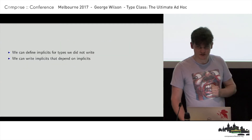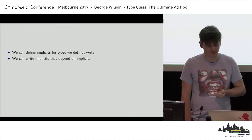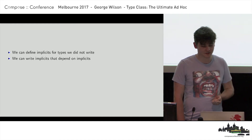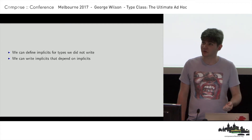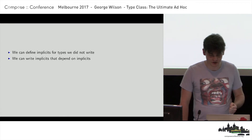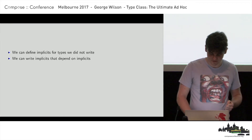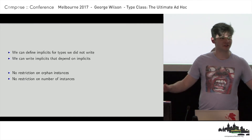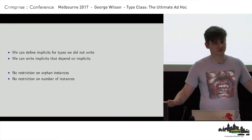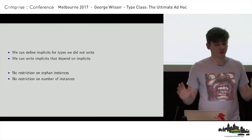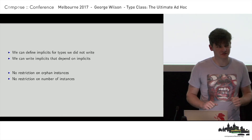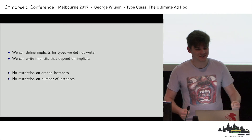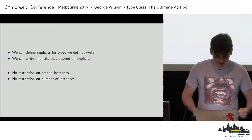We have similar advantages to what we had with type classes: we can define implicits for types we didn't write, and we can write implicits that depend on other implicits. And unlike type classes, we have no restriction on orphan instances, and no restriction on the number of instances. So we can really go to town. This is a lot of power.